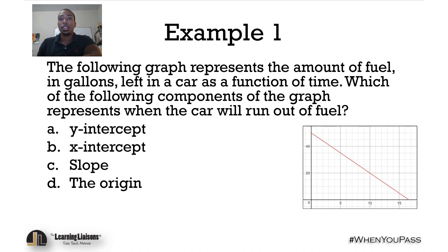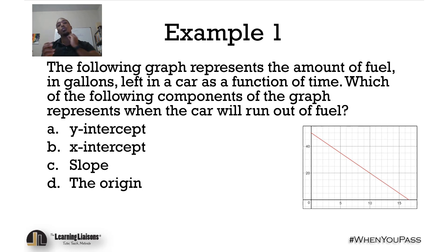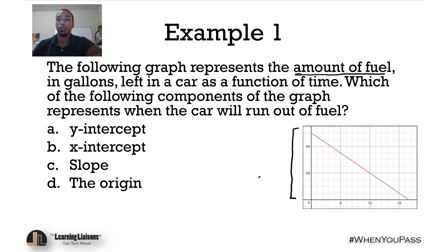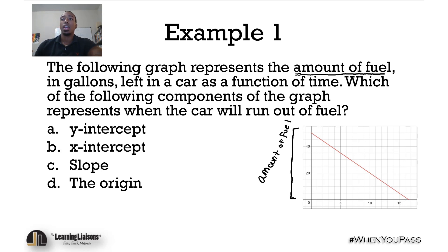This graph represents the amount of fuel as a function of time. The amount of fuel is your output — your dependent variable — and that would be the Y axis. Time is always your independent variable, on the X axis. The question asks which component represents when the car will run out of fuel.